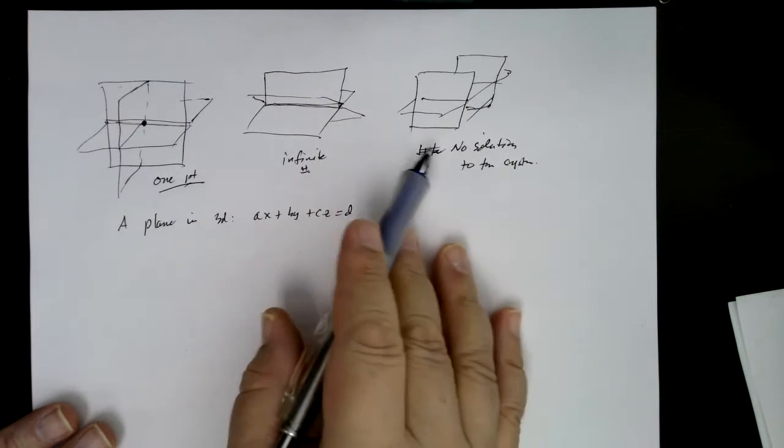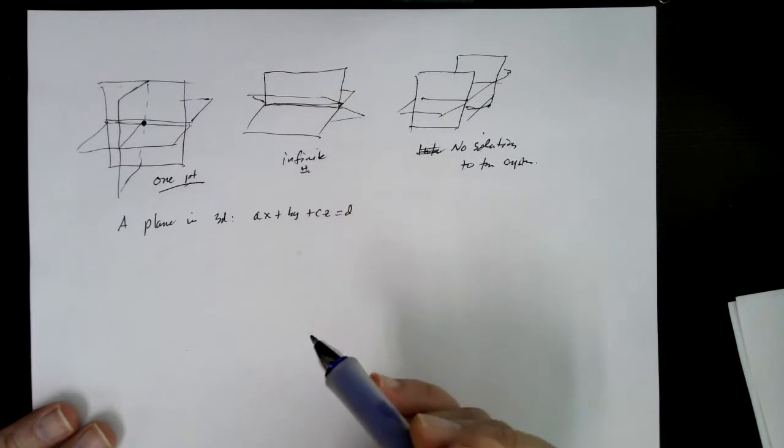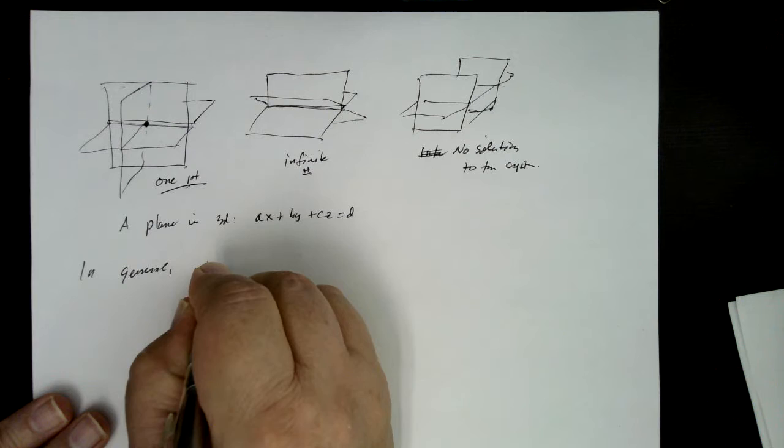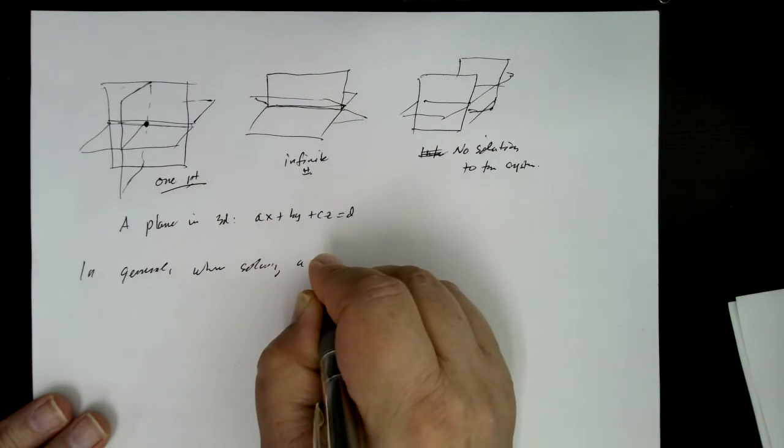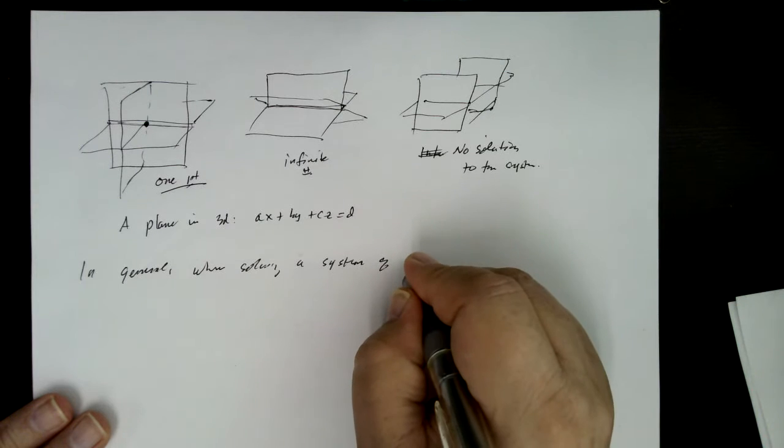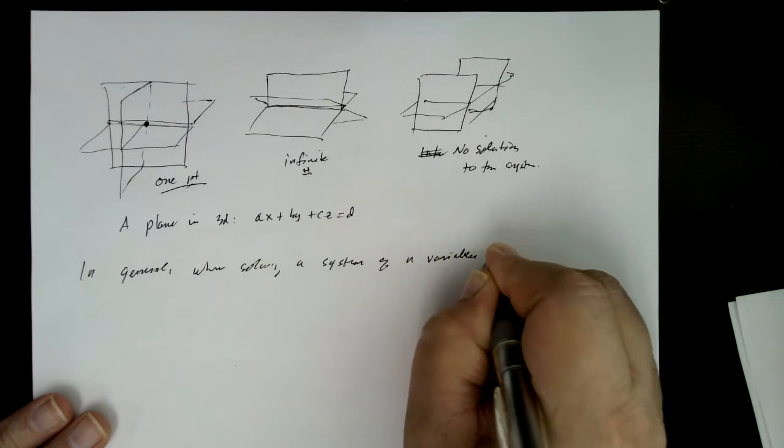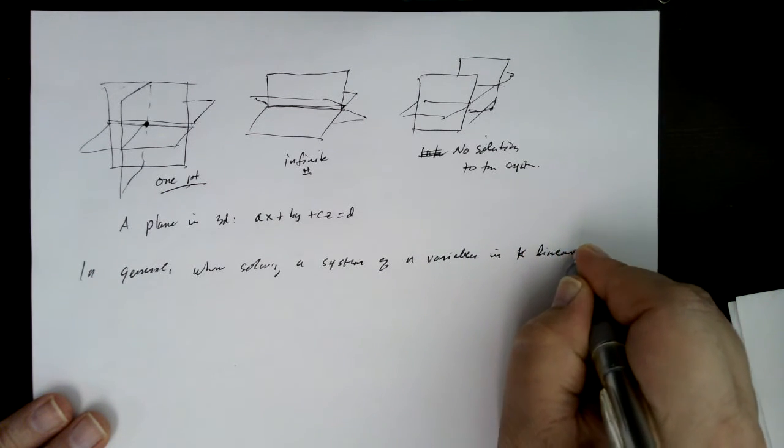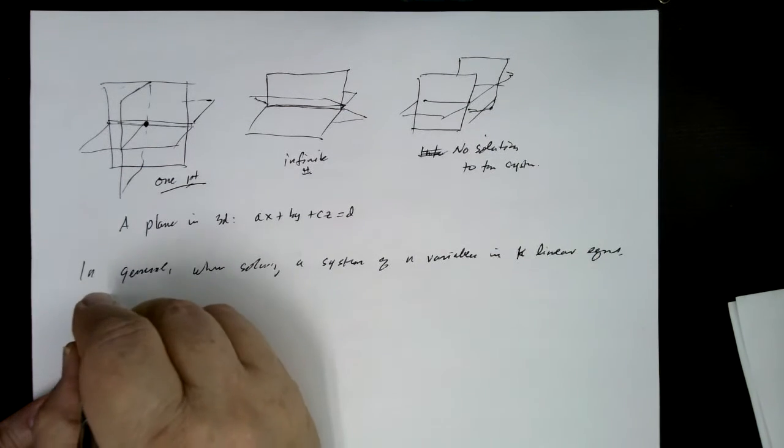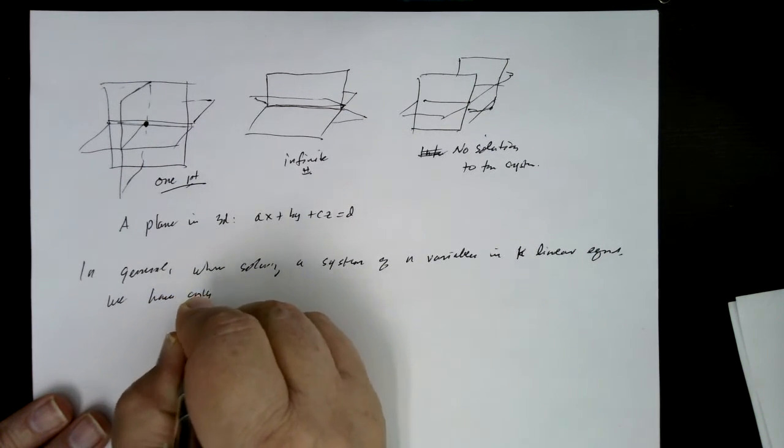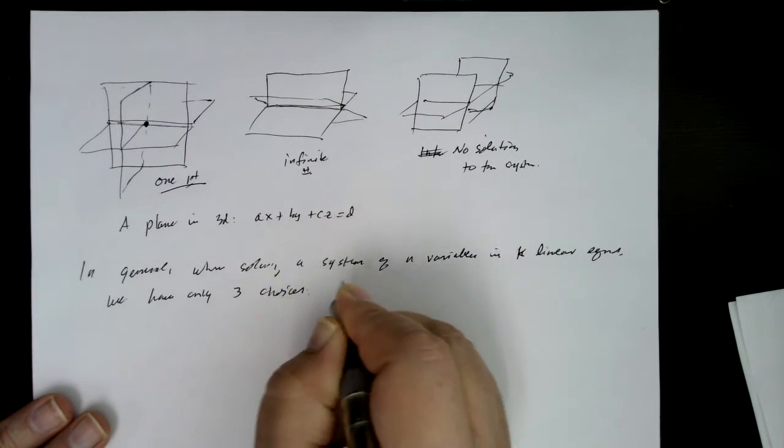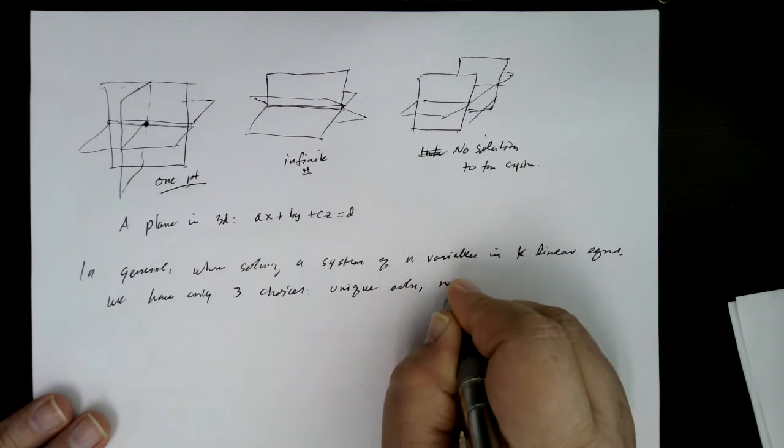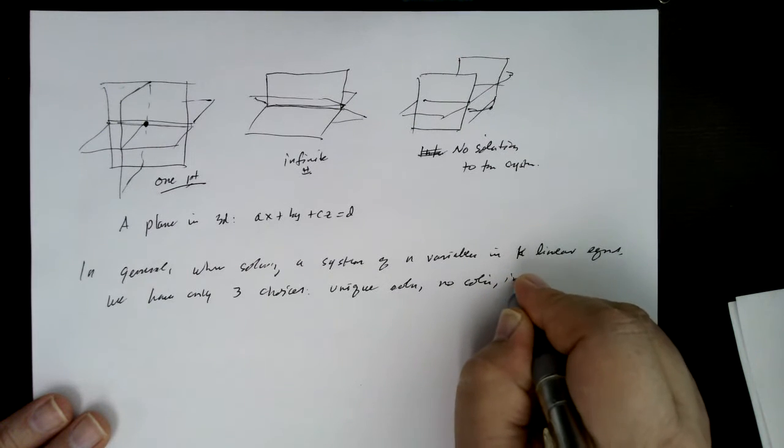Of course, these are only in 2 and 3D, but the same thing holds true in general. So in general, when solving a system of n variables in k linear equations, they don't have to be the same number, we have only three choices for possible outcomes: unique solution, no solution, or an infinite number of solutions.